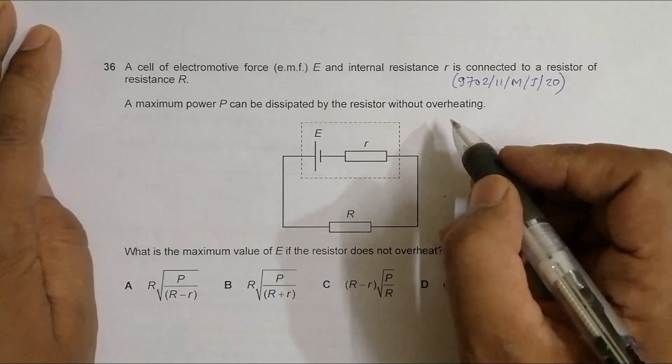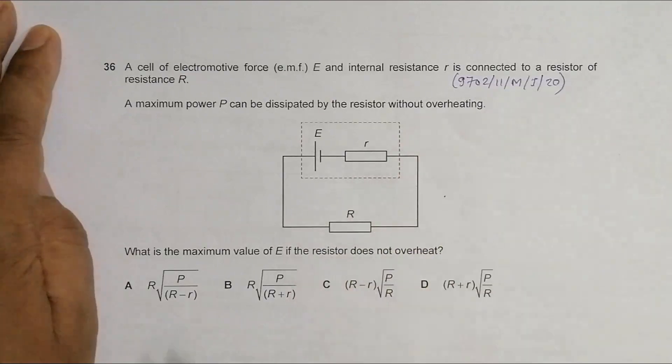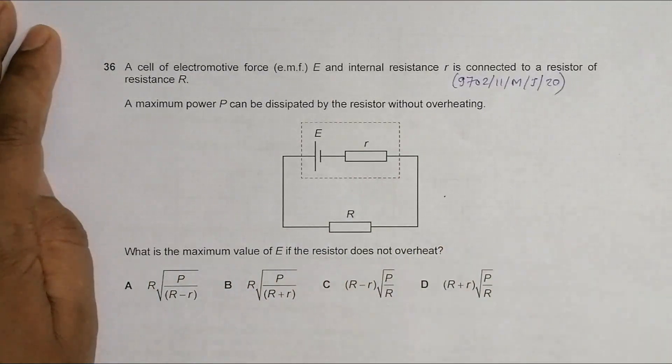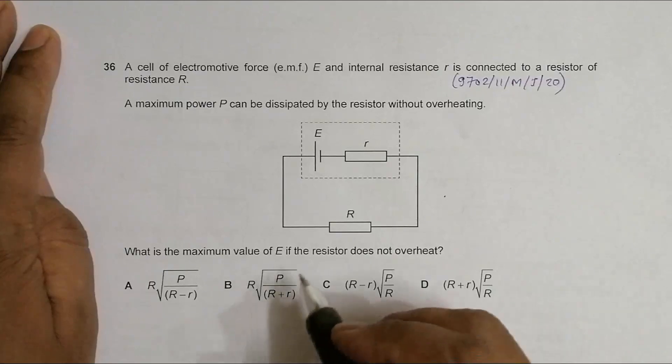What is the maximum value of E if the resistor does not overheat? So we have to find the maximum value of E. This requires that we find the relation between this E max and this power max here.